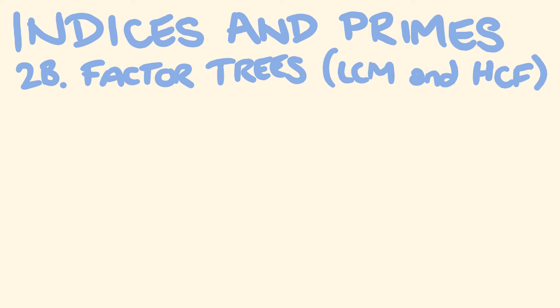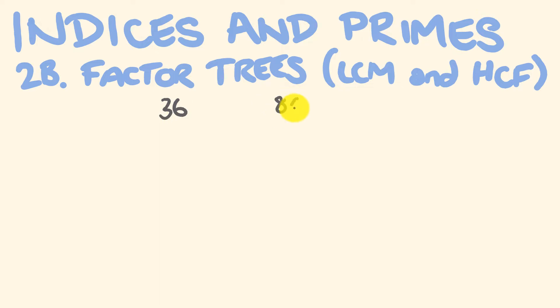G'day. In this video we're going to be using factor trees to work out the lowest common multiple and the highest common factor of two numbers. The lowest common multiple is the lowest number that these numbers will go into, and the highest common factor is the highest common number that goes into them. Let's have an example — we'll look at the numbers 36 and 84, and first we're going to work out the factor trees of these.